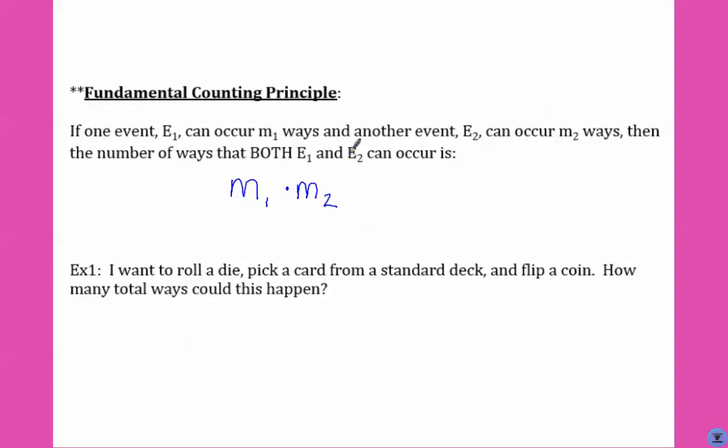So let's say I want to roll a die, pick a card from a standard deck, and flip a coin. How many total ways could this happen? Well, if you roll a die, six things can happen, because there's six sides, so you could have one through six, times how many different cards are there in a standard deck, there's 52, times how many things can happen when you flip a coin, two, you either get heads or tails. So these things could happen together 624 ways.